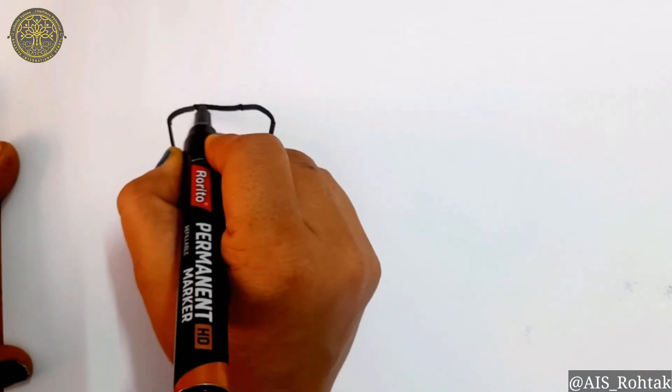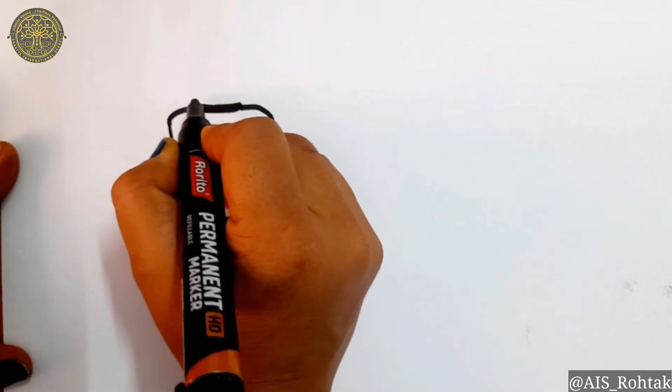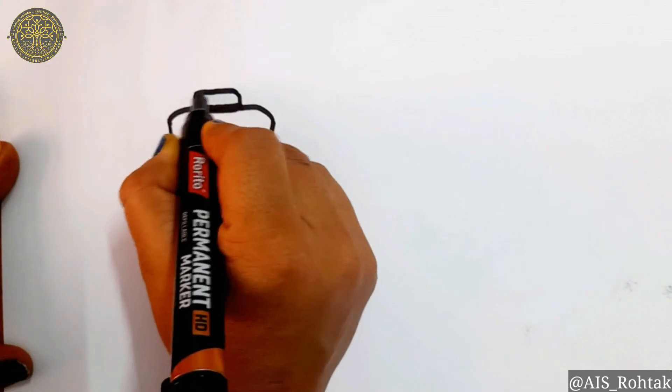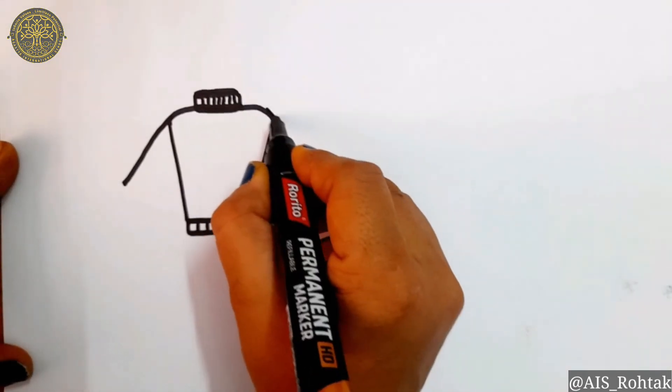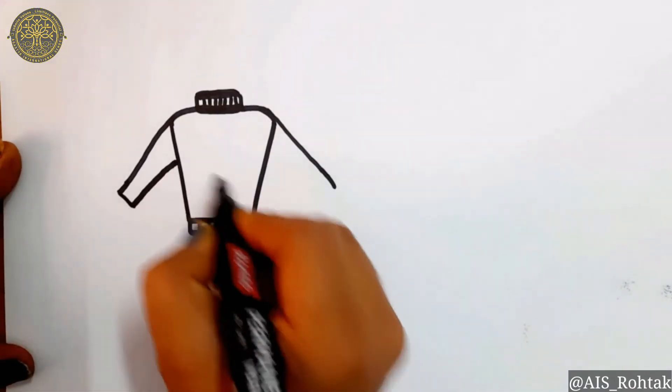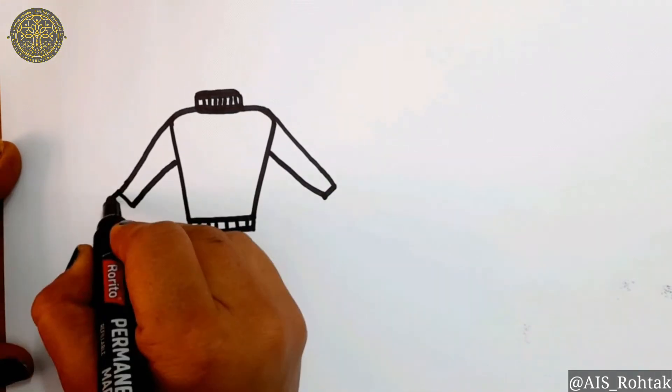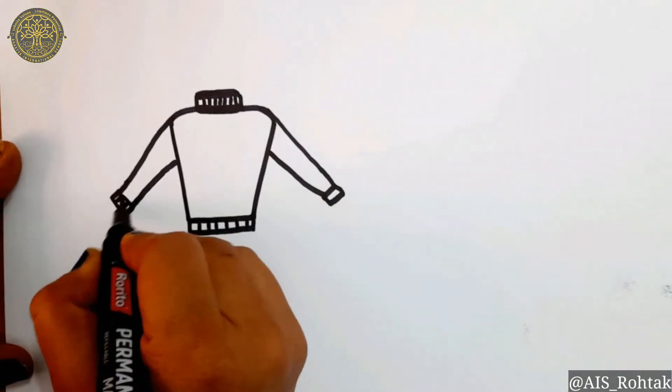Make it darker from the center. Then draw two standing lines and join it with a sleeping line. Draw some standing lines in the center. For the arms, draw slant lines like this and then join it. Now draw some design at the end of the arm and in the center.